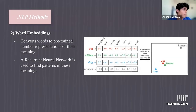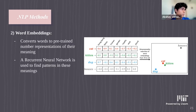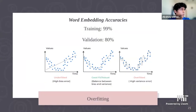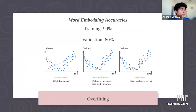Another NLP method we tried is word embeddings, where every word is converted to a pre-trained numerical representation of its meaning — similar words are closer together in the visualization. After text is converted to word embeddings, it's fed into a recurrent neural network for predictions. For our word embedding model, training accuracy was 99% and validation accuracy was 80%, meaning the model overfit — it wasn't making generalized enough predictions.